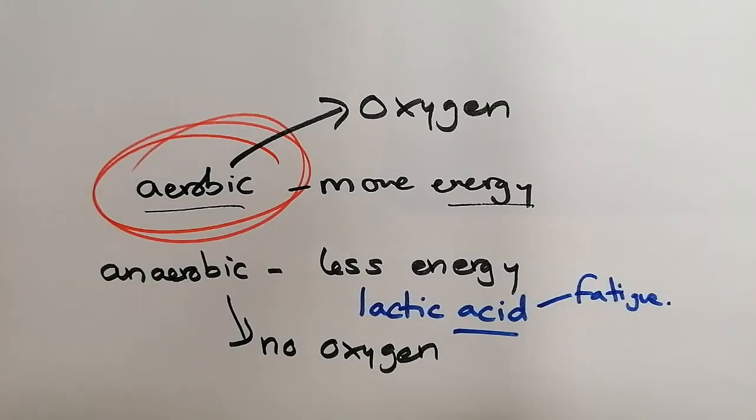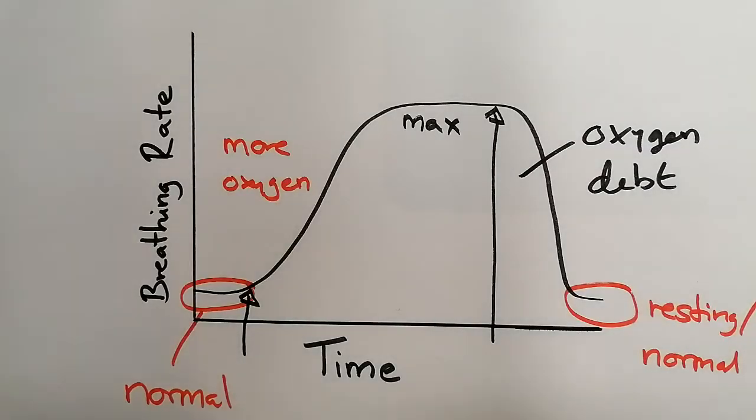And fatigue is basically when you start to get tired and your muscles hurt and you have cramp. And in biology, we just focus on the word fatigue rather than any of those others. So we've got anaerobic respiration going on to release a bit of energy and it makes this lactic acid. But the lactic acid causes fatigue, and because it is toxic, it needs to be got rid of.